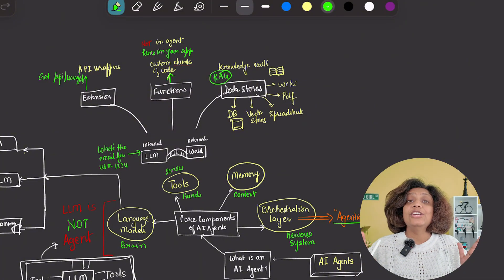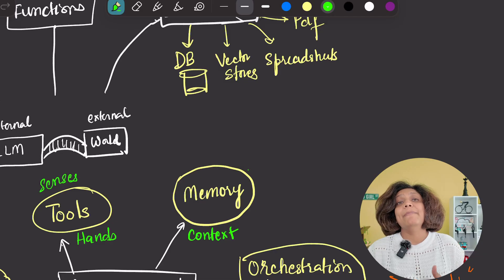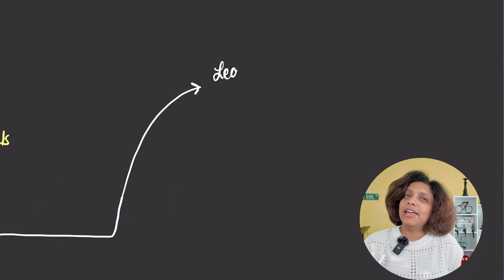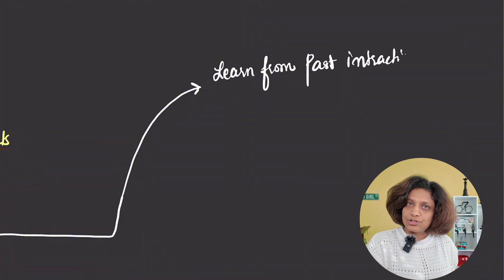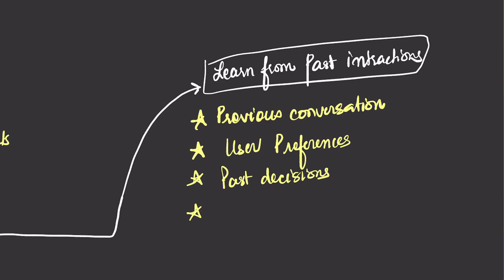Here's what separates good AI agents from great ones. Memory. Memory is what allows an AI agent to learn from past interactions, maintain context across conversations, and get smarter over time. Think about it. Without memory, every conversation with your agent starts from zero. It's like talking to someone with amnesia. You have to re-explain everything every single time. But with memory, your agent remembers previous conversations, user preferences, past decisions, and historical context.